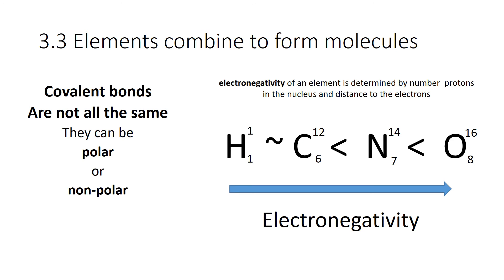To understand how you get a polar versus nonpolar covalent bond: when you're sharing the electrons, you may not share them equally. There's a property of elements called electronegativity, and it's determined by the number of protons in the nucleus and the distance to the electrons. Protons are positively charged, electrons are negatively charged, and opposite charges attract. Here are the four most abundant elements in life — hydrogen, carbon, nitrogen, and oxygen — with atomic numbers one, six, seven, and eight respectively.